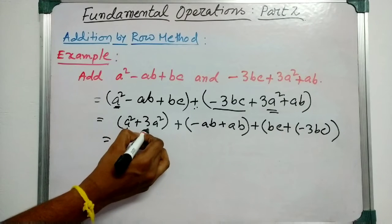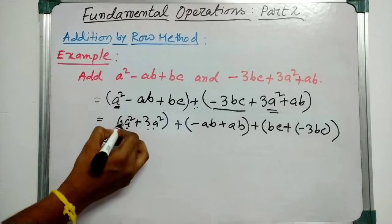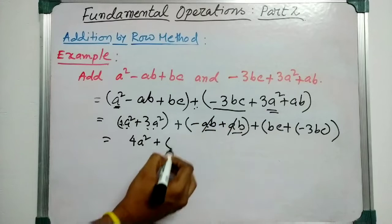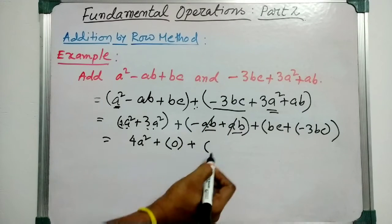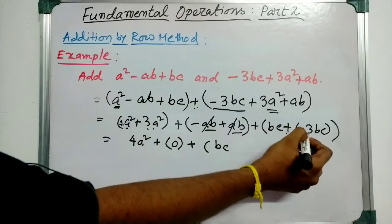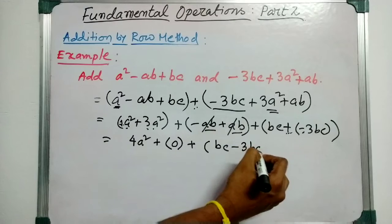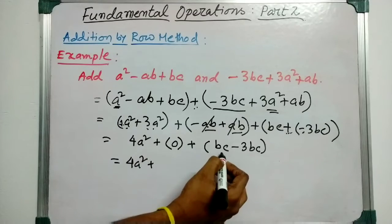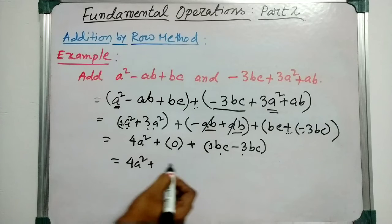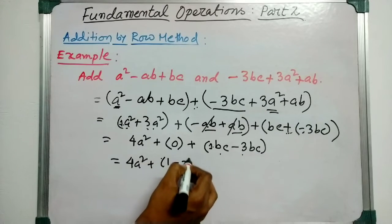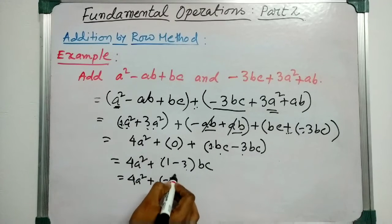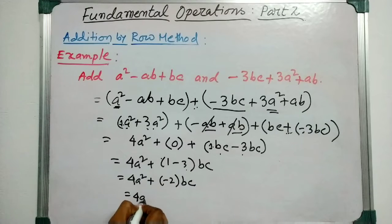Now solving each bracket: s² and 3s² means 1 + 3, so that gives 4a². For minus ab plus ab, they cancel each other, giving 0. For bc plus minus 3bc, that is 1 minus 3, giving minus 2bc. So 4a² plus 0 plus minus 2bc equals 4a² minus 2bc. That is the result.